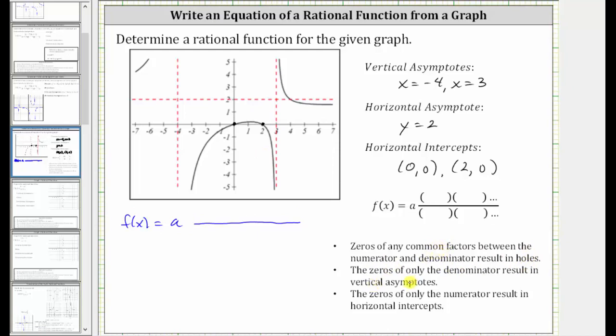Next, the zeros of only the denominator result in vertical asymptotes. And since we have two vertical asymptotes, this information will give us two binomial factors of the denominator. If x equals negative four is a zero of the denominator, the denominator must contain a factor of x plus four. And if x equals three is a zero of the denominator, then the denominator must contain a factor of x minus three.